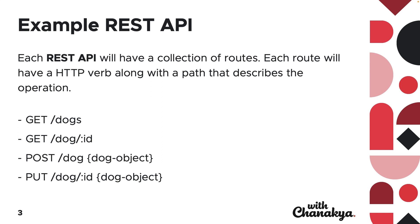Let's take a quick look at an example REST API. In this tutorial today, we'll be building an API that manages dogs — that's our resource. In this API, we have multiple different operations defined by what we call HTTP verbs. You can use POST to create, PUT to update, GET to retrieve, and DELETE to delete. So you can use different types of HTTP operations to perform CRUD on your resources. When we want to get a dog by its ID, we use the GET route with dog and a path parameter, which is ID. Let's take a look at how we'll build this in the actual tutorial today.